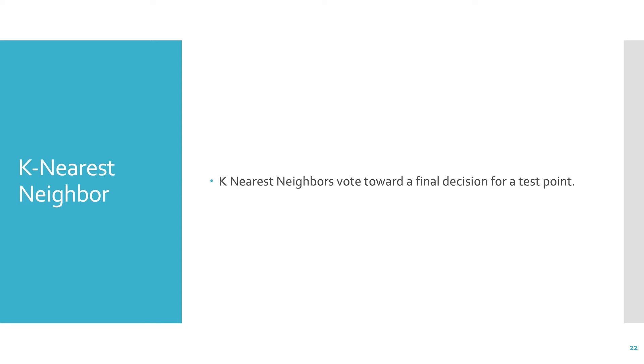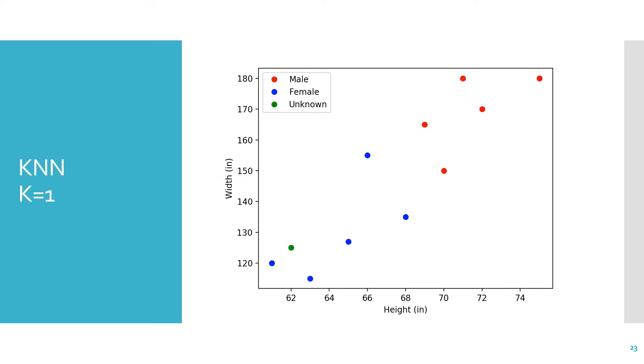What we're going to learn about in this class is the k-nearest neighbor algorithm. So we take k neighbors, and we let them vote towards a final decision for a test point. So let's look at the data that we were just looking at, and we have this unknown point. We have all the blue points, which are female, and all the red points, which are male. And we look at this, and we say, what if we're looking at our nearest neighbor? So if we look at the nearest neighbor, it's going to be this one, which is labeled as female. So we'll say, this is a female sample.